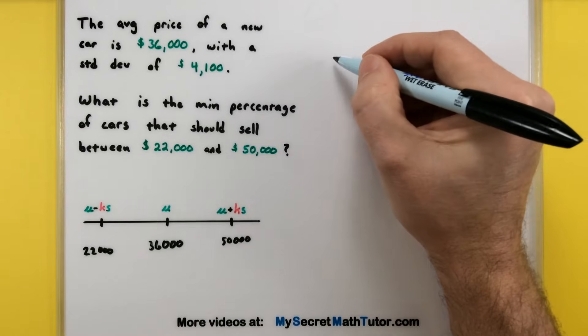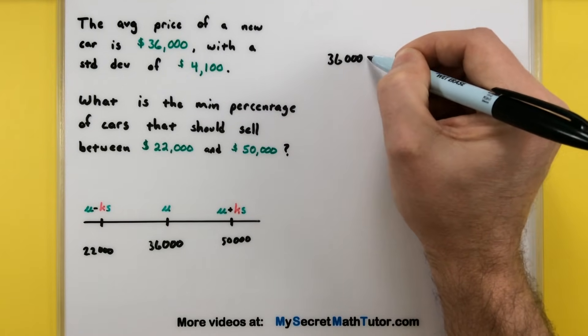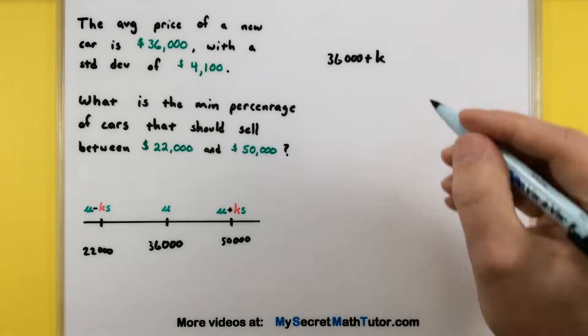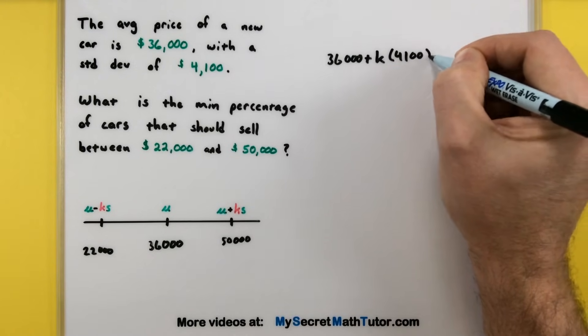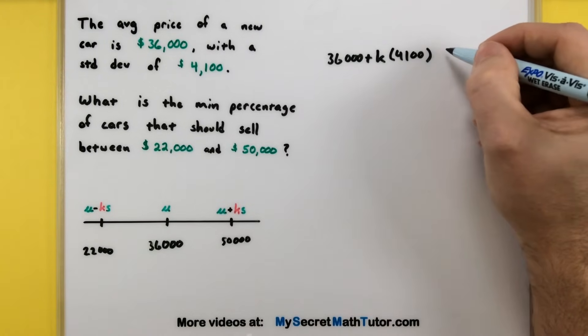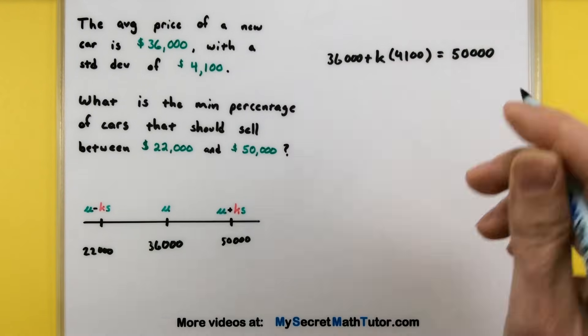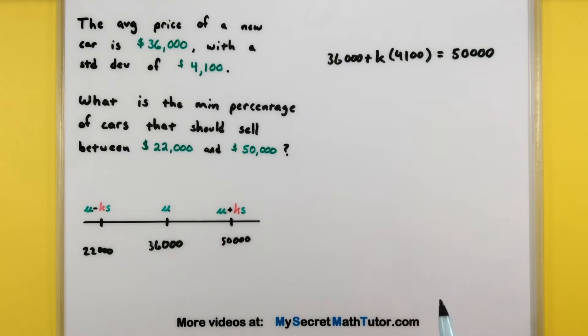All right, so let's work with that. I know that my mean of $36,000 plus some number of standard deviations, there's our standard deviation, should give us that $50,000. So I'm really just borrowing that top value. You could also do the same thing with the bottom value using these two. And we want to solve for k.